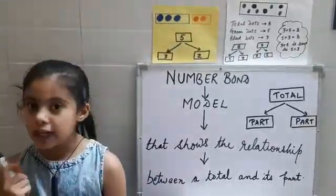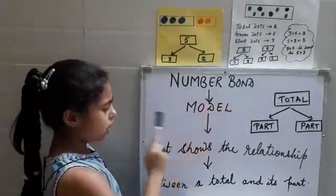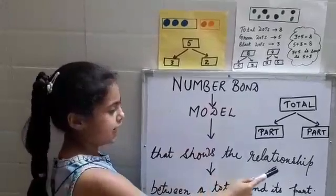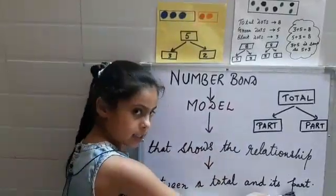First, we should know what are number bonds. A number bond is a model that shows the relationship between a total and its parts.